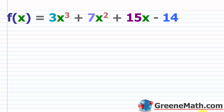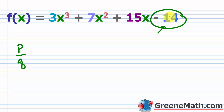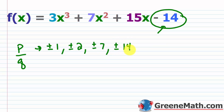For the final example, f(x) = 3x³ + 7x² + 15x − 14: p comes from factors of 14 — that's 1 × 14 and 7 × 2 — so p = ±1, ±2, ±7, ±14. q comes from the leading coefficient 3, which is prime, so q = ±1, ±3.